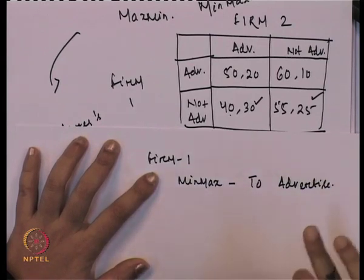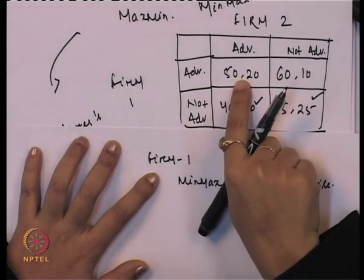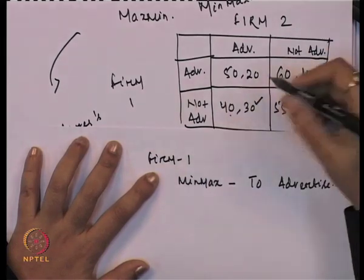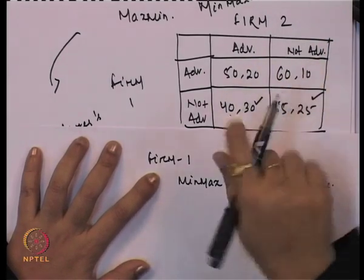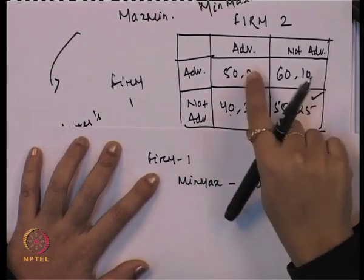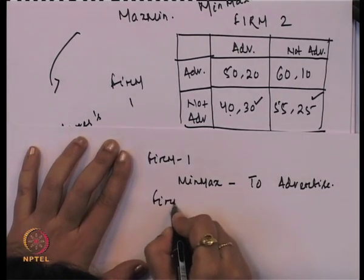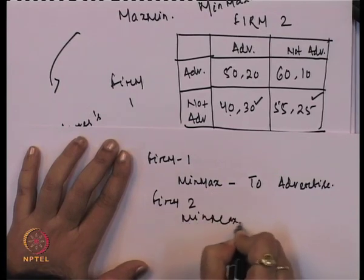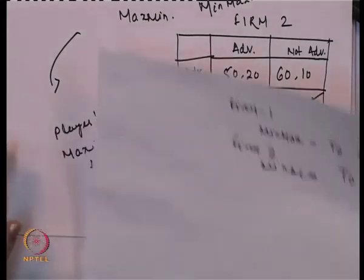Similarly for firm 2's minimax strategy: if firm 2 is advertising, the payoff for firm 1 is 50; if firm 2 is not advertising, firm 1 gets 60 when advertising and 55 when not advertising. Since 50 is less than 60 and 40 is less than 55, firm 2 will prefer to advertise because that gives firm 1 a lower payoff. Therefore the minimax strategy for firm 2 is also to advertise. This is how we understand dominated strategy, dominant strategy, and maximin and minimax strategy.